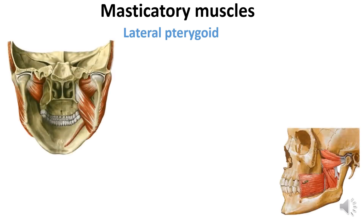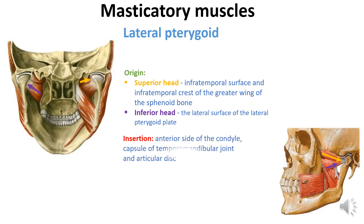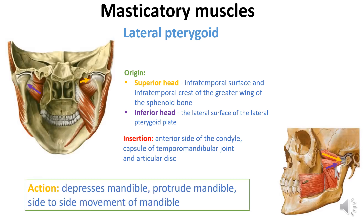The lateral pterygoid originates with two heads: a superior head and an inferior head. The superior head is located on the infratemporal surface and infratemporal crest of the greater wing of the sphenoid bone. The inferior head is located on the lateral surface of the lateral pterygoid plate. This muscle inserts into the anterior side of the condyle, the capsule of the temporomandibular joint, and the articular disc. This muscle depresses the mandible, protrudes the mandible, and provides side-to-side movement of the mandible.